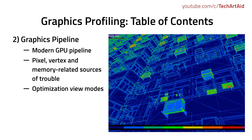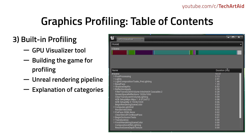Part 3 will be the introduction to profiling. I will cover the entire process of profiling your scene within Unreal Engine. I will use the GPU visualizer tool and explain all the passes that the Unreal rendering pipeline consists of. With this tool we will be able to find, for example, what shadowed lights have the biggest cost, or how exactly big is the cost of post-processing in our scene.